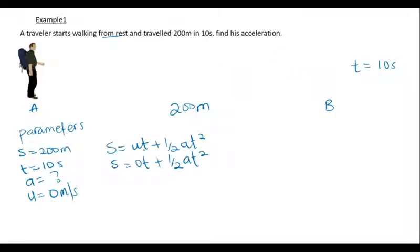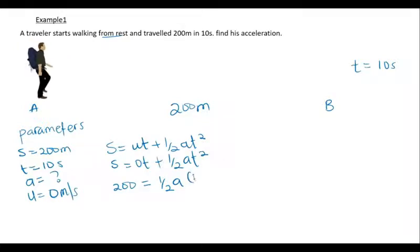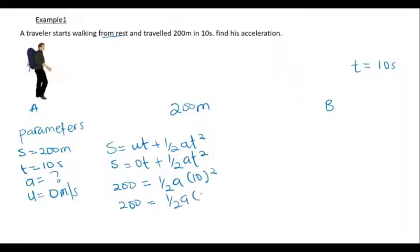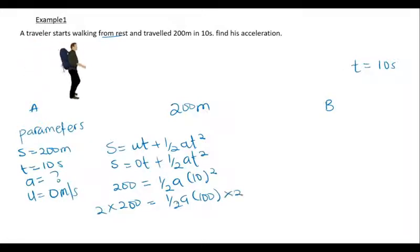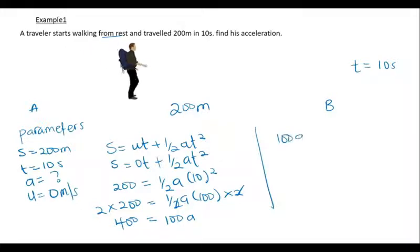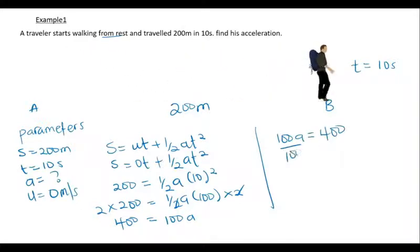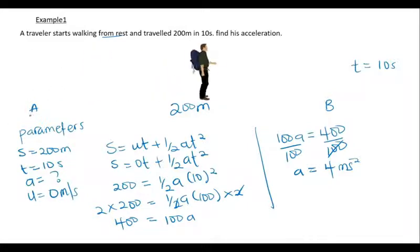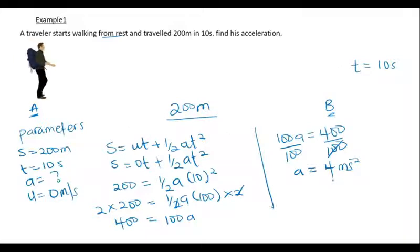We have 200 = ½ × a × 10², which gives 200 = ½ × a × 100. Multiplying both sides by 2 to remove the fraction: 400 = 100a. Dividing both sides by 100, we get the acceleration = 4 meters per second squared. So the acceleration of this traveler moving from point A to point B, covering a distance of 200 meters, is 4 m/s².